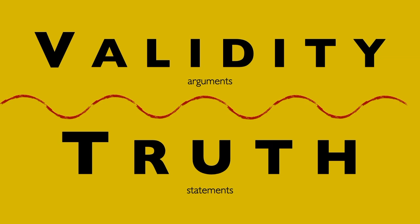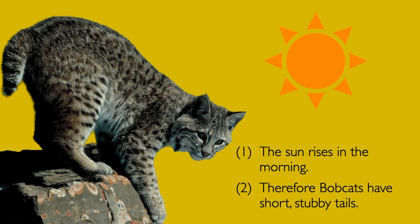Here's an example: The sun rises in the morning. Therefore, bobcats have short stubby tails. Both of these statements are true, but the reasoning is so bad you can barely call it reasoning. The premise does not support the conclusion, so the argument is invalid — and that's bad. But the statements are true — that's good. So keep in mind: invalid does not mean false.